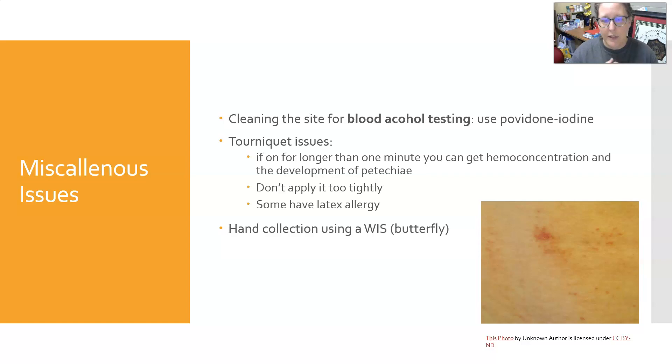For hand collection using a winged infusion set or butterfly needle, you need to be very careful. It is a good alternate site, but make sure you don't blow the hand vein — those veins can be fragile and roll around more. You also have a greater risk of needlestick injury with a butterfly needle. That wraps up the pre-collection complications; we'll continue with collection issues and venipuncture complications during collection in the next segment.